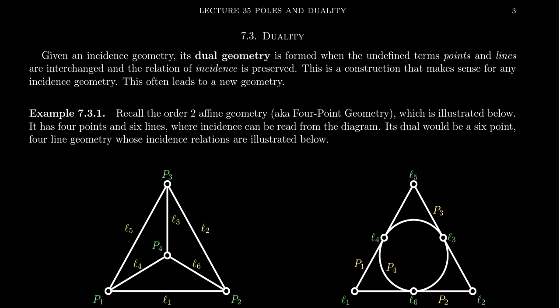A dual geometry, given any incidence geometry, will interchange the roles of points and lines. Because if we go back to the very axiomatic beginning of this course, points and lines are considered undefined terms, and incidence is just a relationship between points and lines. So the dual geometry is formed by swapping the roles of point and line while keeping the same incidence relationship.